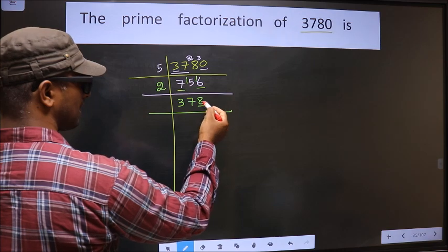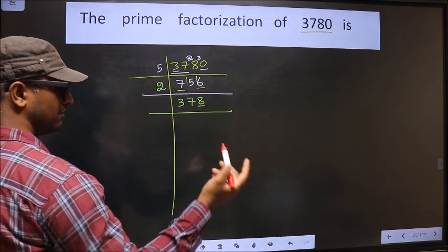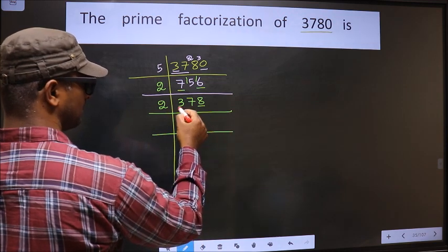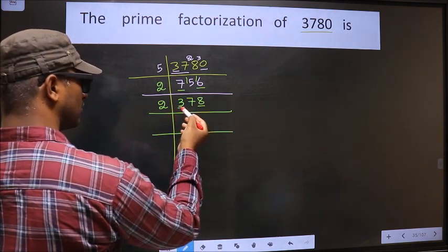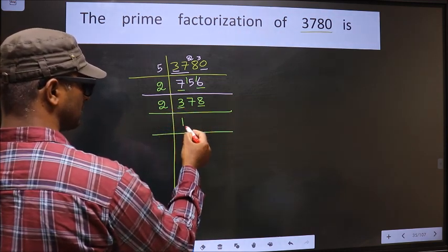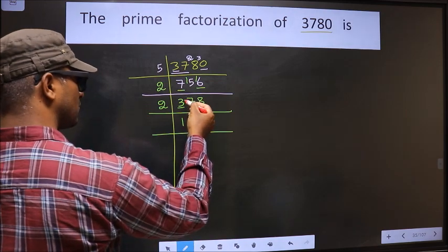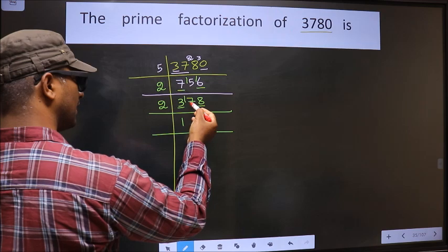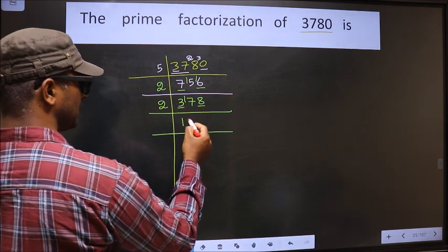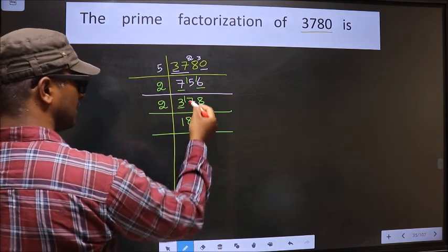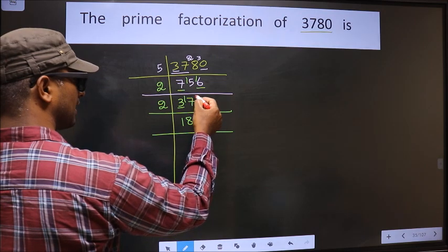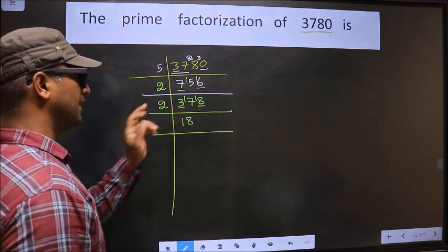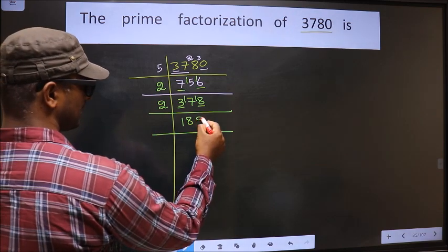Now, for this number, the last digit is 8, which is even. So we take 2 here. The first number is 3. A number close to 3 in the 2 table is 2×1=2. 3 minus 2 is 1; 1 carried forward making it 17. A number close to 17 in the 2 table is 2×8=16. 17 minus 16 is 1; 1 carried forward making it 18. When do we get 18 in the 2 table? 2×9=18.